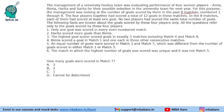The matches are numbered 1 through 8. The 4 players together had scored a total of 12 goals in these matches. In the 8 matches, each of them had scored at least 1 goal and no 2 players had scored the same total number of goals. The following facts are given about the goals scored by these 4 players only — we are not counting the rest of the players of the teams.